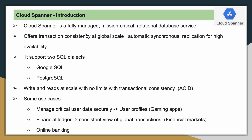Cloud Spanner is a fully managed, horizontally scalable, mission-critical relational database service. It offers transactional consistency at global scale and automatic synchronous data replication for high availability. You can create a Cloud Spanner instance with two options: regionally and multi-regionally. It supports two types of SQL dialects: Google SQL and PostgreSQL.